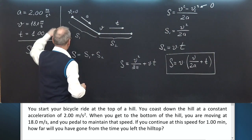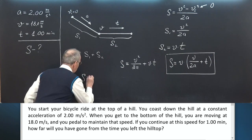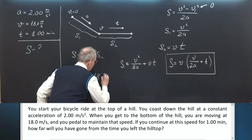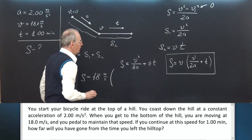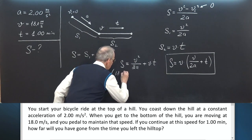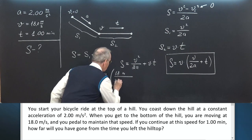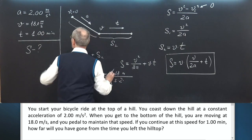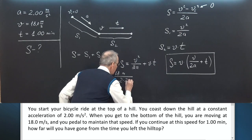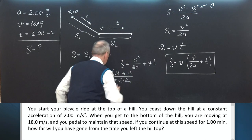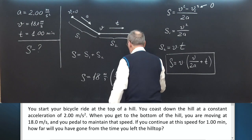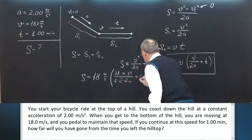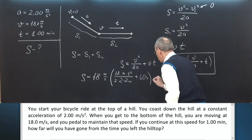Let's substitute numbers. S equals V, 18 meters per second, times 18 meters per second over 2 times 2 meters per second squared, plus 1 minute. 1 minute is 60 seconds.